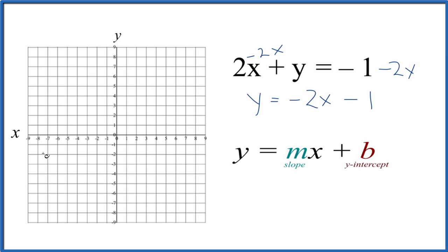Here's our y-intercept. So now we can graph this. We go to the y-intercept at negative 1. That's where we'll cross the y-axis, right there.